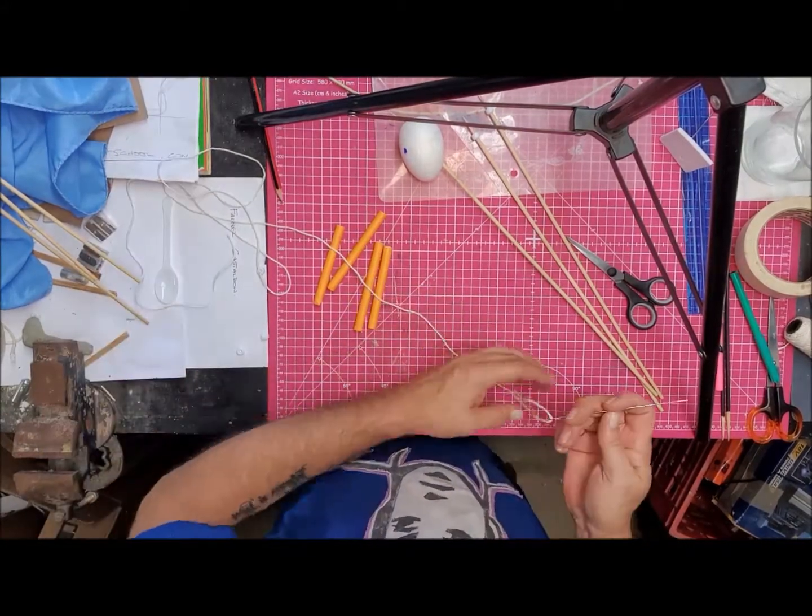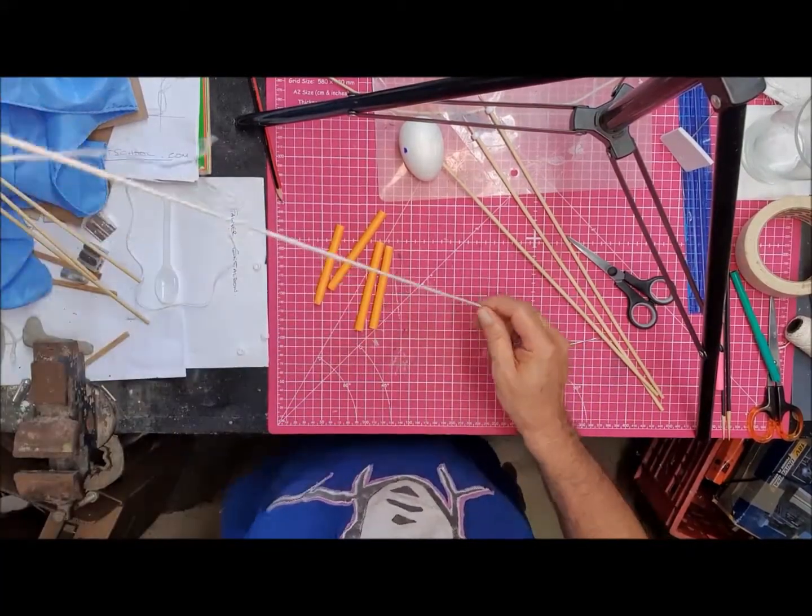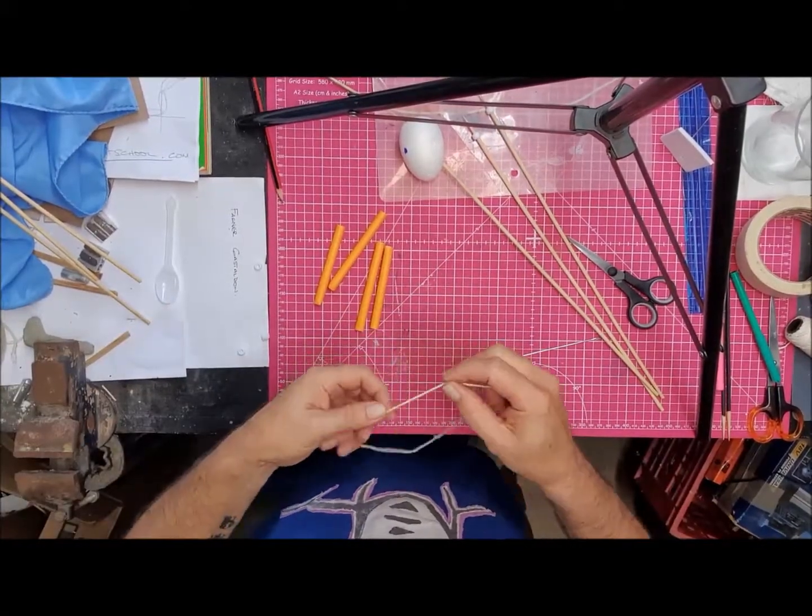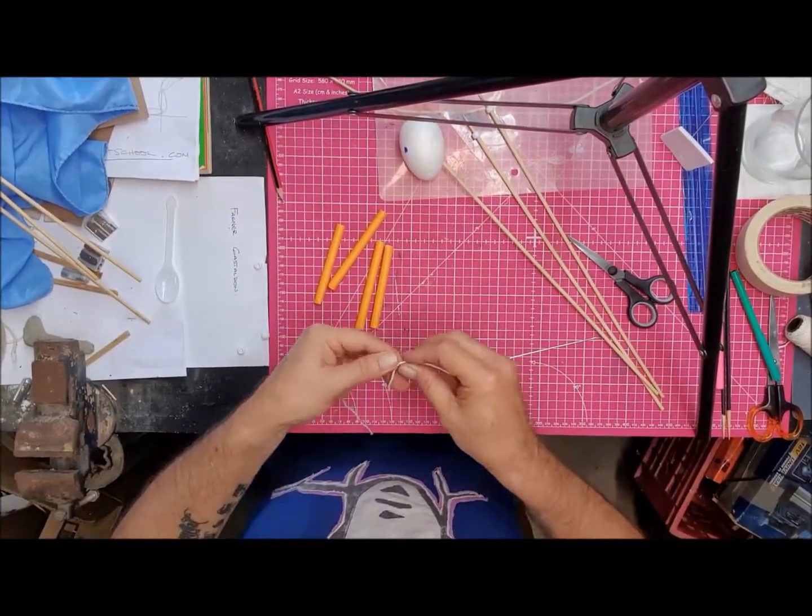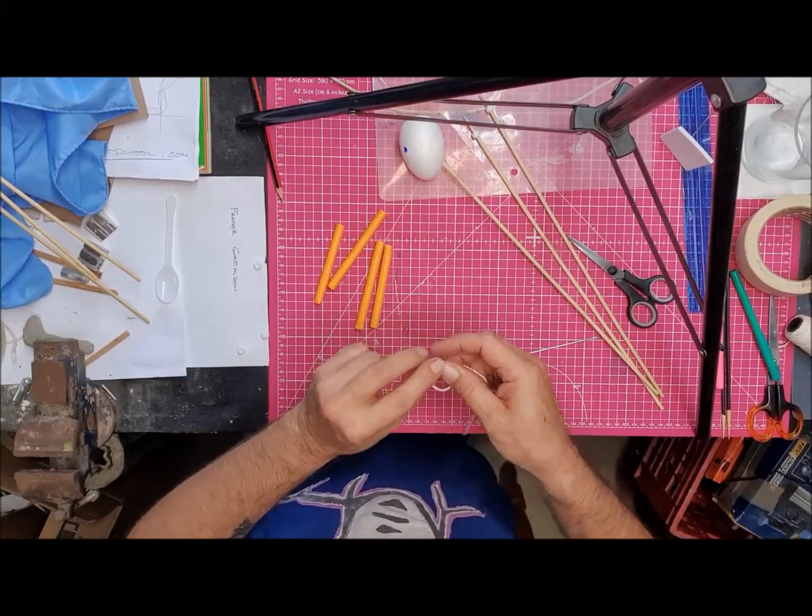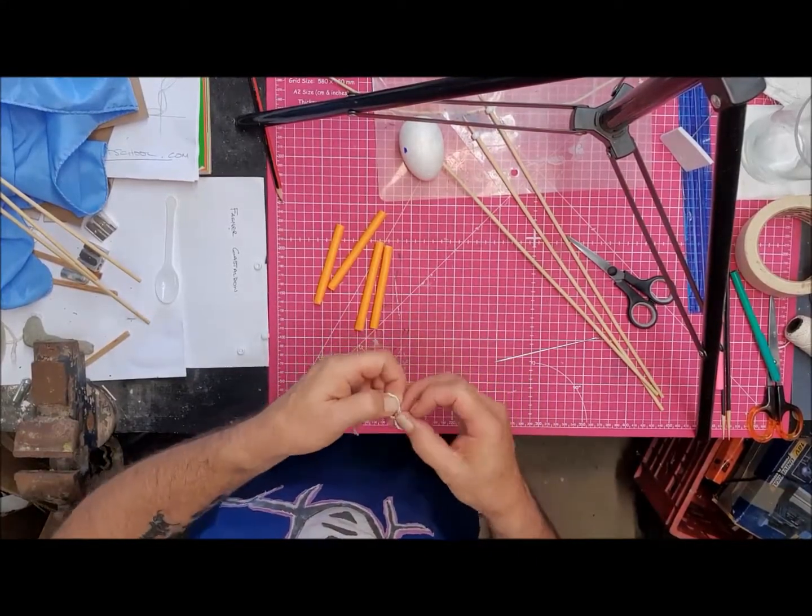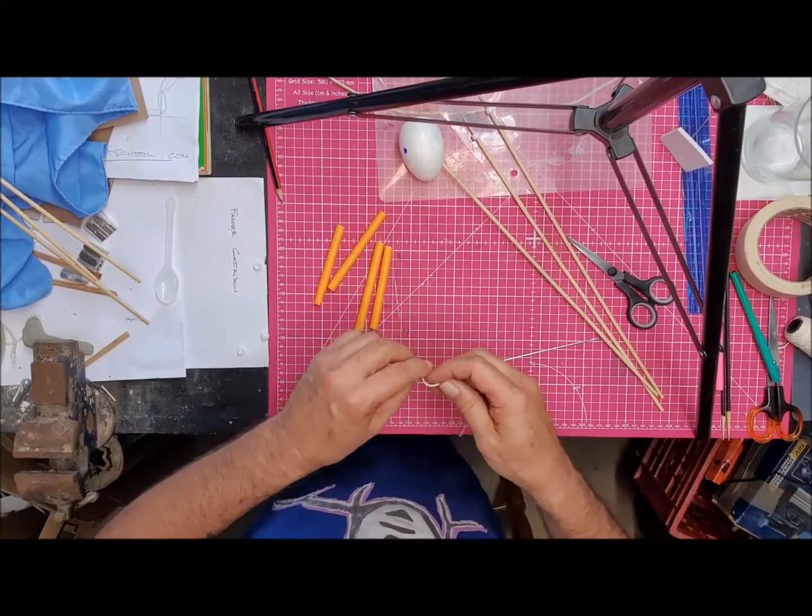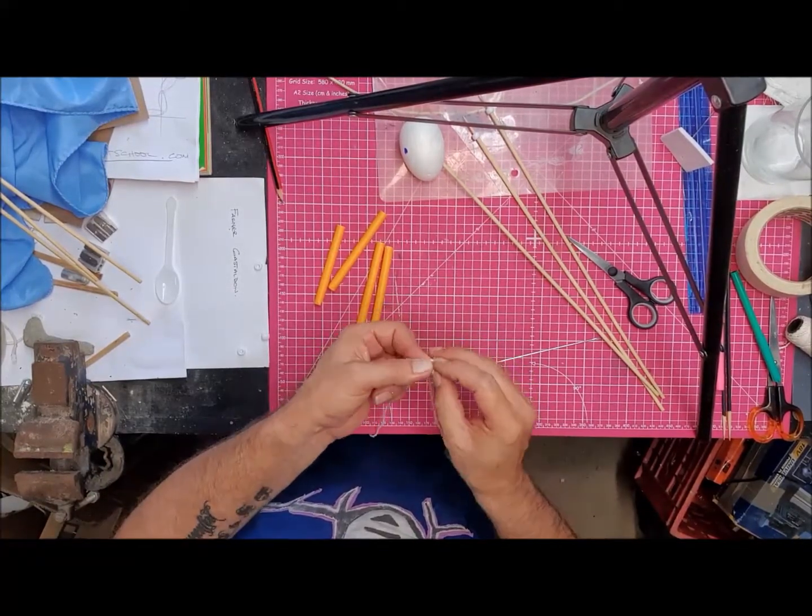Then I've got a piece of string which I'm going to tie around the neck of the puppet shaft. Double knot, I think, just to help.